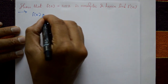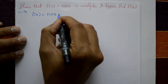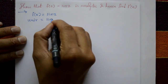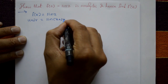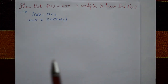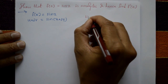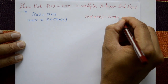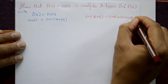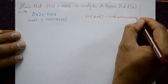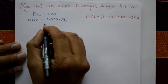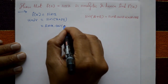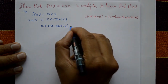Given f of z is equal to sin z, and f of z means u plus iv equal to sin of z, which is sin of x plus iy. Using the formula sin of a plus b equals sin a cos b plus cos a sin b, this becomes sin x into cos of iy plus cos x into sin of iy.